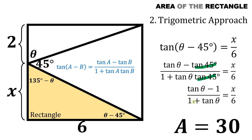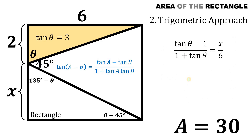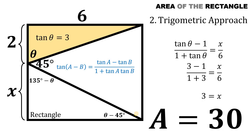We find tan θ using the right triangle at the top. Since this is a rectangle, the opposite side of angle theta also equals 6. So tan θ = 6/2 = 3. Replacing all tan θ with 3 and simplifying gives 1/2. To solve for x, multiply both sides by 6: (1/2) × 6 = 3. So x = 3, and the area of the whole rectangle equals 30 square units. That is our answer to this question.